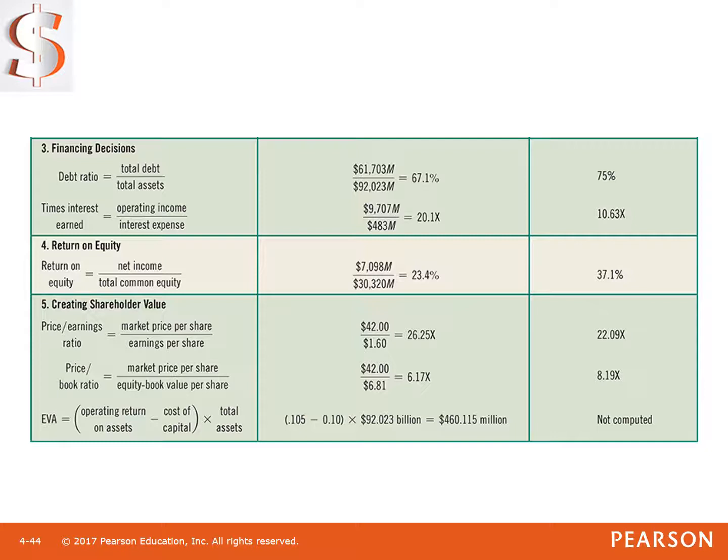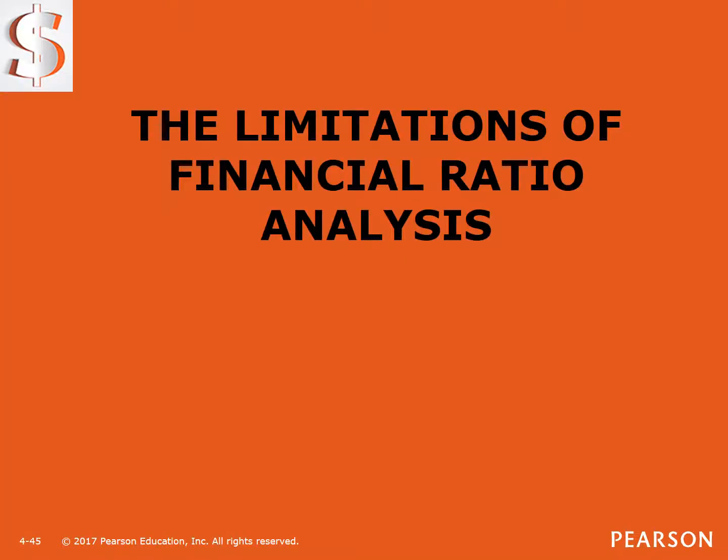For creating shareholder value: the price-earnings ratio tells you how much the market values a dollar of earnings per share. And EVA tells us the added value beyond accounting profit that management is making for shareholders. These calculations are done in ratio form so we can compare to past performance, budget expectations, our competitors, and our industry.